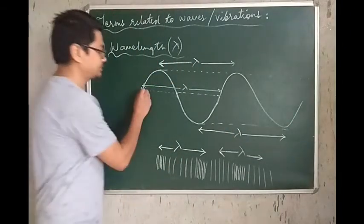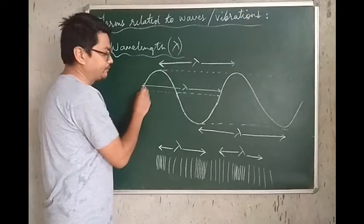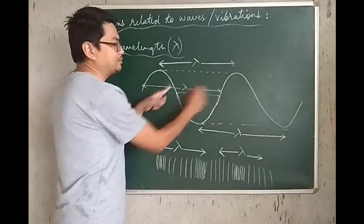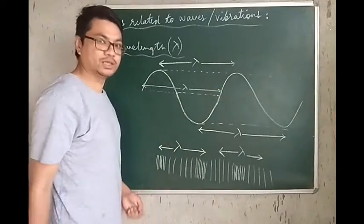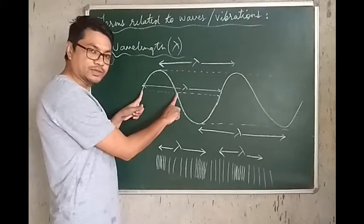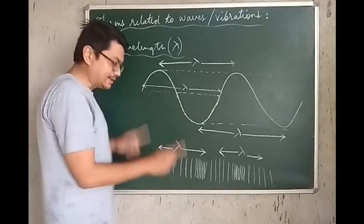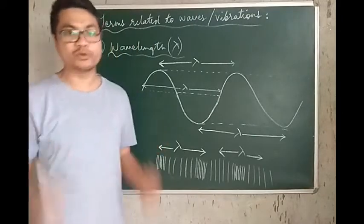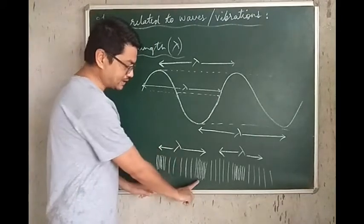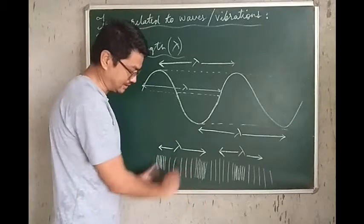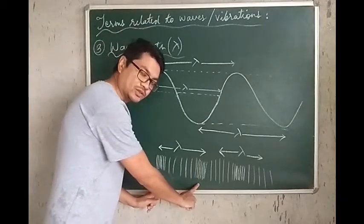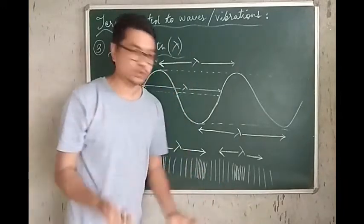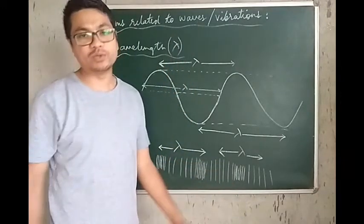The length of one complete wave is what is called wavelength, so half a wavelength is lambda by 2. Likewise, for a longitudinal wave such as a sound wave, the distance between two consecutive compressions, or two consecutive expansions, is what is called the wavelength of the longitudinal wave.